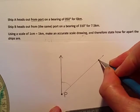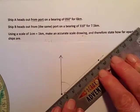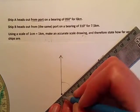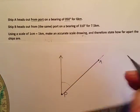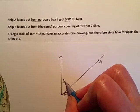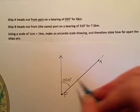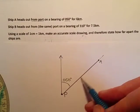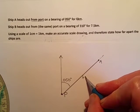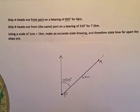And that point there is where ship A ends up because that is an angle of 50 or 050 degrees, a bearing of 50, and that is six centimetres or six kilometres in real life. So that's where ship A ends up.